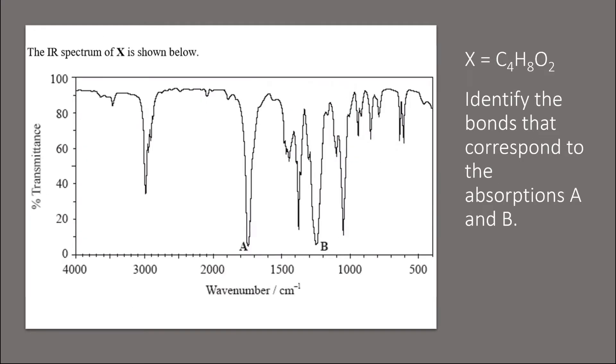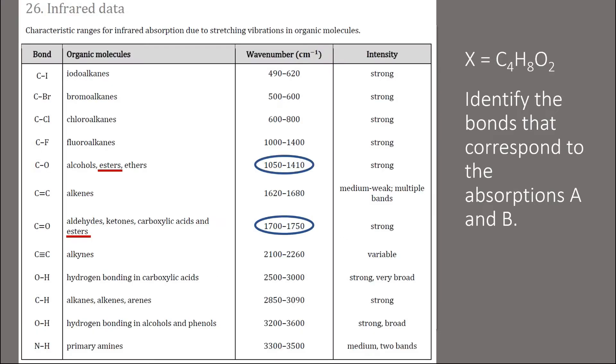While a mass spectrum tells us parts of a molecule, an infrared spectrum tells us the functional groups. From the data booklet, we know that there is a carbonyl C double bond O group in the molecule, which is consistent with the molecular formula and the mass spectrum peak of 29 that we saw previously.